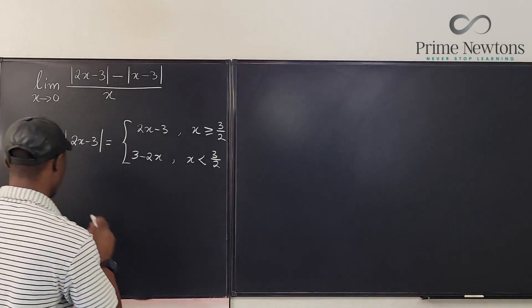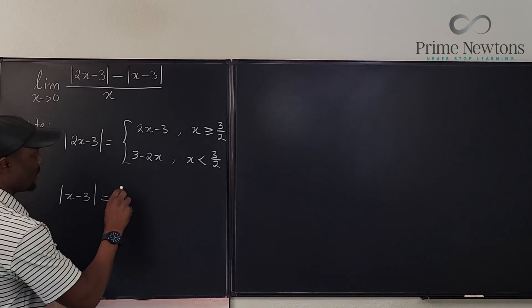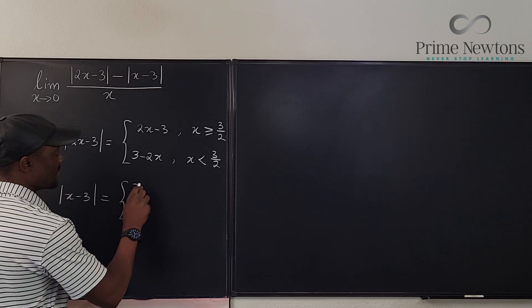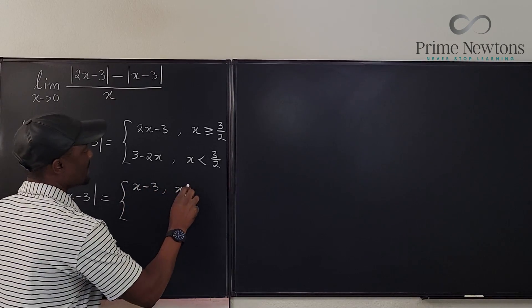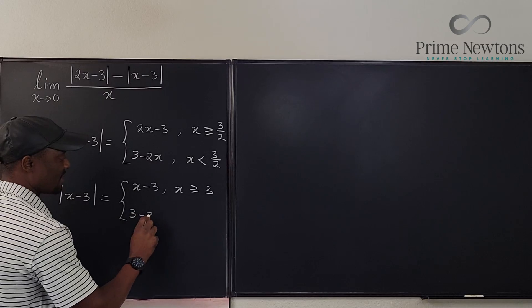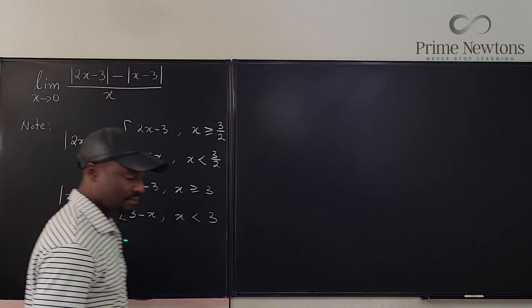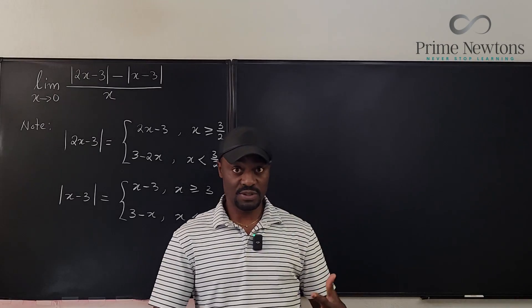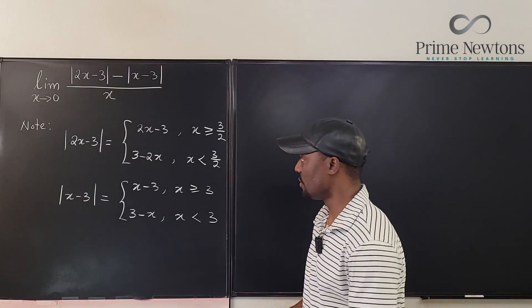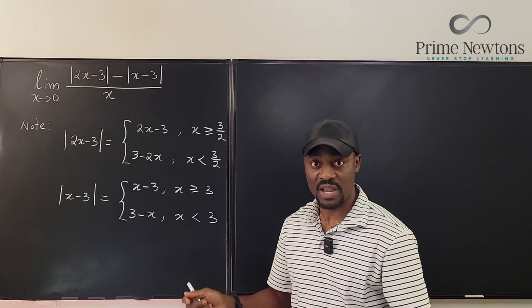Now similarly, we know that the absolute value of x - 3 is equal to x - 3 when x is greater than or equal to 3, or it is 3 - x when x is less than 3. If you watch the previous video, you see the explanation for all absolute value functions: you have to write them as piecewise functions, and these are the two functions that we have.